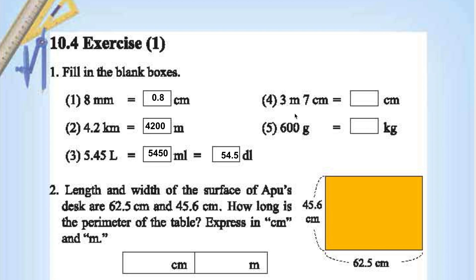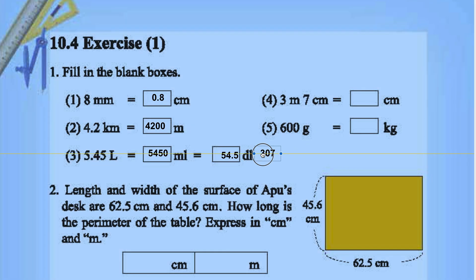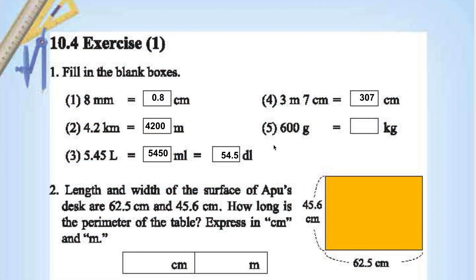3 m, 7 cm, 17 cm. 3 m is 300 cm, so 300 + 7 = 307 cm. 600 grams is 0.6 kg.